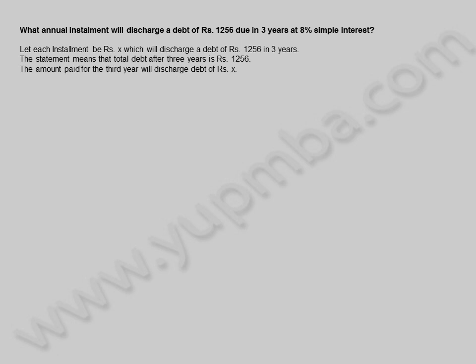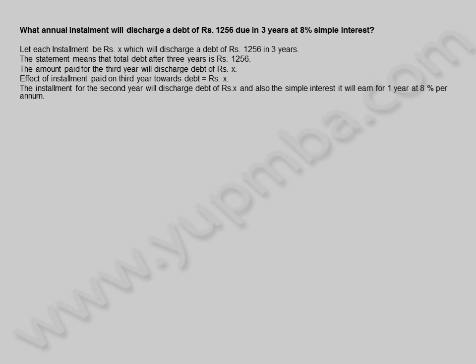The amount paid for the 3rd year will discharge a debt of X rupees. The effect of the installment paid in the 3rd year towards the debt is equal to X rupees. The installment for the 2nd year will discharge debt of X rupees and also the simple interest it will earn for 1 year at 8% per annum. The effect of the installment paid in the 2nd year towards debt is equal to X plus (X × 8 × 1) / 100 rupees.